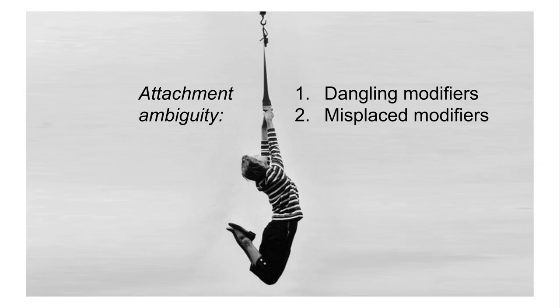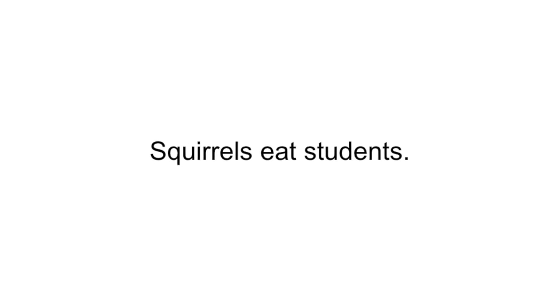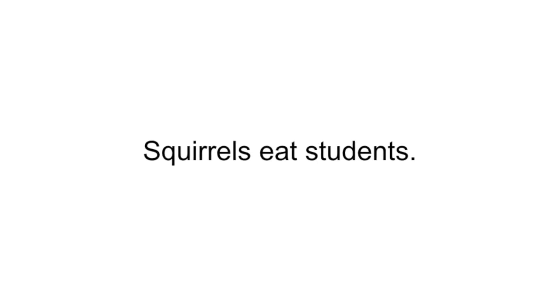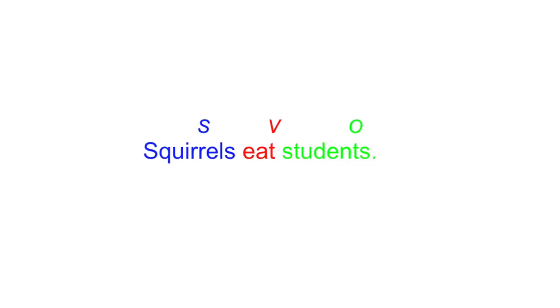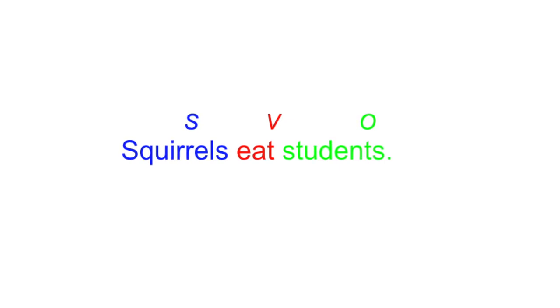Dangling and misplaced modifiers happen when the parts of your sentence don't connect like you think they do. This is also called attachment ambiguity because it's no longer obvious what is modifying what. Let's look back at the basics of sentence structure. Here's a perfectly normal sentence: Squirrels eat students. Eat is the verb because it's what's happening. Squirrels is the subject because they're doing the eating. And students is the object because students is what's getting eaten.